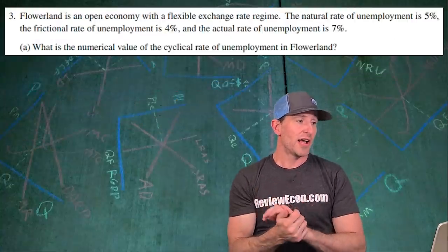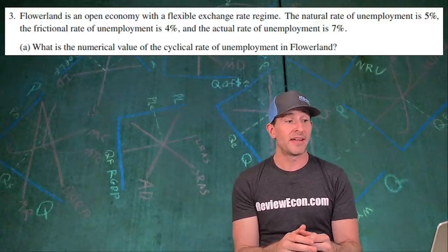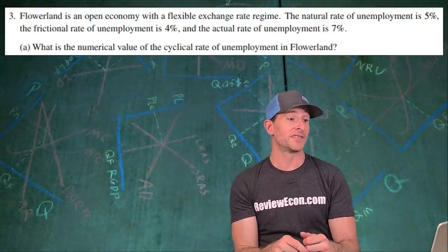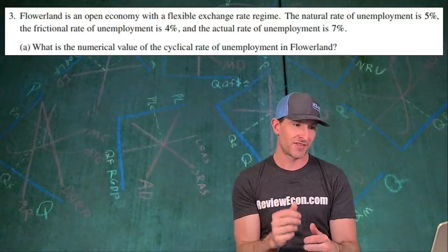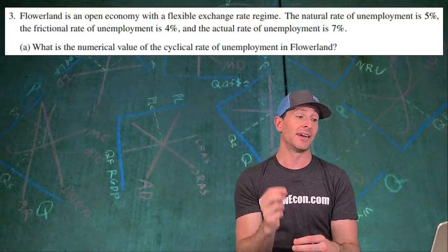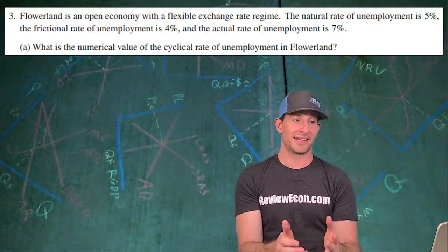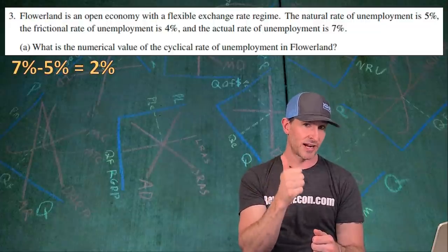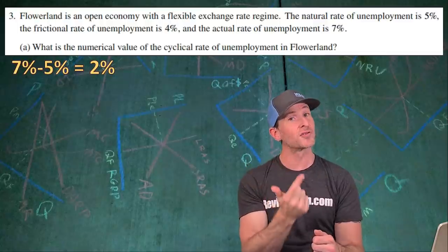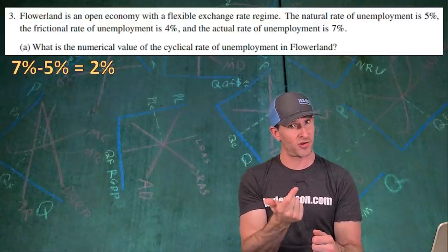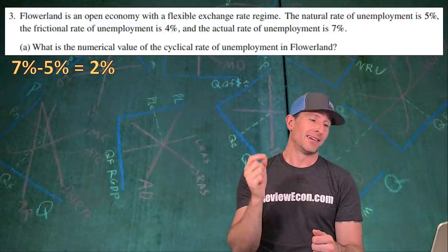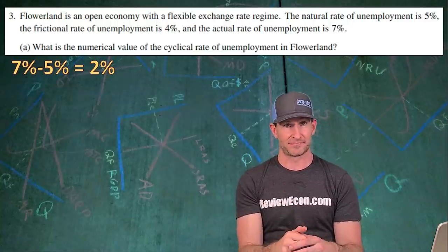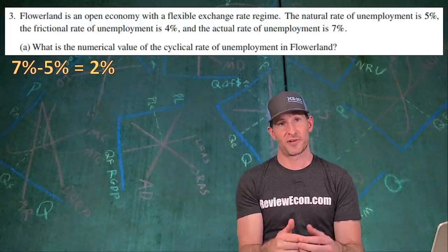On to question number three. In Flowerland, an open economy with a flexible exchange rate regime, the natural rate of unemployment is 5%, the frictional rate of unemployment is 4%, and the current actual rate of unemployment is 7%. We calculate the numerical value of the cyclical unemployment rate. We take the 7% current actual rate of unemployment and subtract the natural rate of unemployment, which is 5%. The 4% frictional rate is a distractor. That gives us 2% for our cyclical unemployment rate. Show your math — set up the formula and come up with your answer.